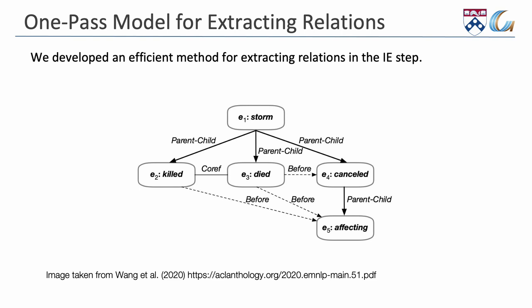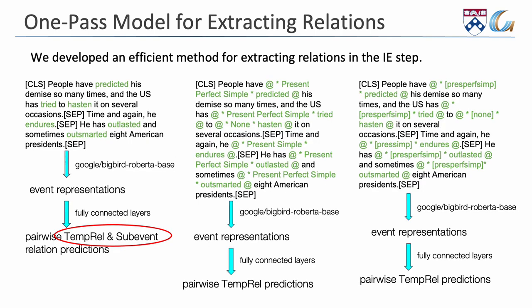Our model extracts two types of relations between events, namely temporal and hierarchical relations. For example, to extract temporal or sub-event relations between events that would give us order and hierarchy of actions,